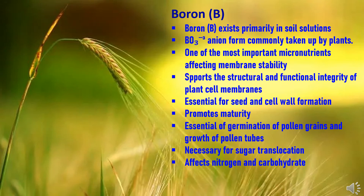Boron exists primarily in soil solution as an anion form, which is most commonly taken up by plants. Boron is one of the most important micronutrients affecting membrane stability, and it supports the structural and functional integrity of plant cell membranes. It is essential for seed development, cell wall formation, and promotes maturity of the crop. Boron is essential for germination of pollen grains and growth of pollen tubes, which is very important for seed setting. Boron application is generally recommended during the flowering period of crops, and it is also necessary for sugar translocation and affects nitrogen and carbohydrate availability.